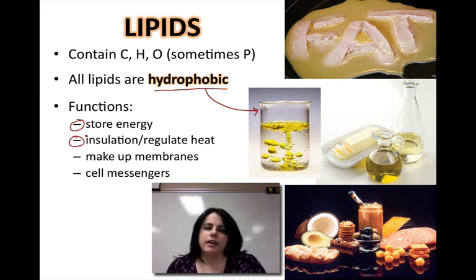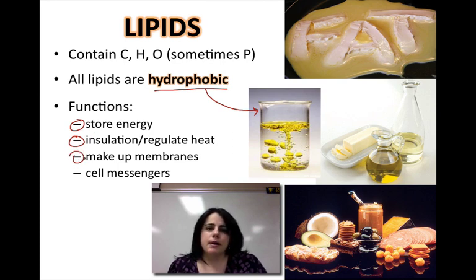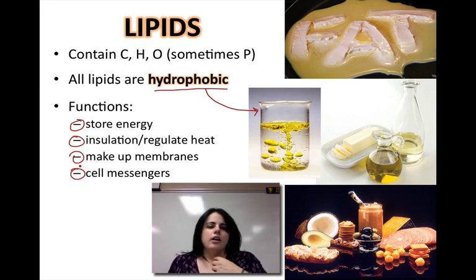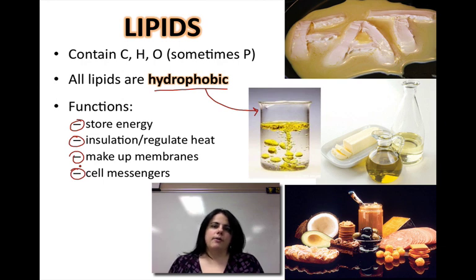Lipids are really good at insulating and regulating your heat — think of whales with blubber. The blubber is just a bunch of fat and it keeps them warm. They make up cell membranes, so every single cell in your body is made up of a type of lipid called phospholipids that we're going to talk about. And the last thing they're really good at is sending chemical messages — there are hormones that go throughout your body and control different parts and tell you how to act under certain situations.